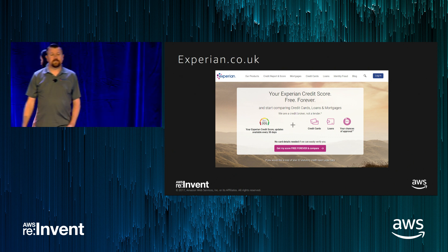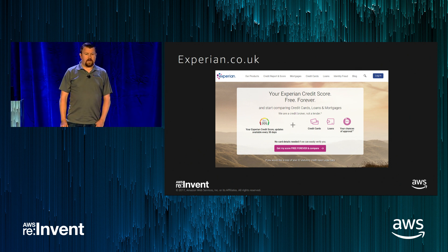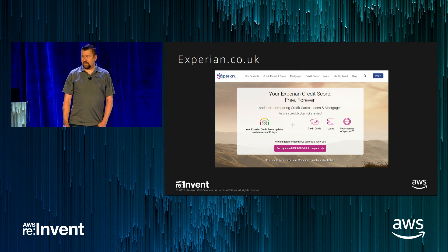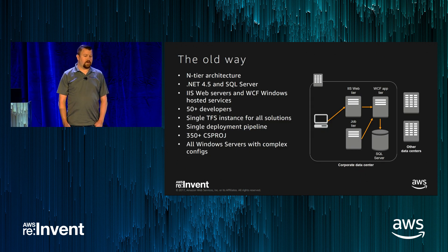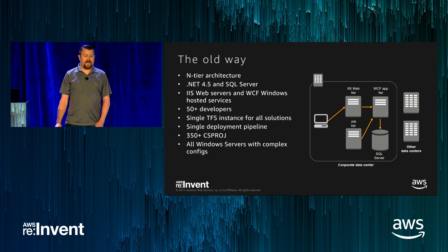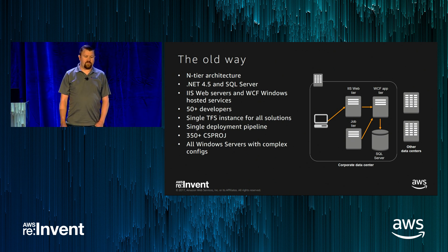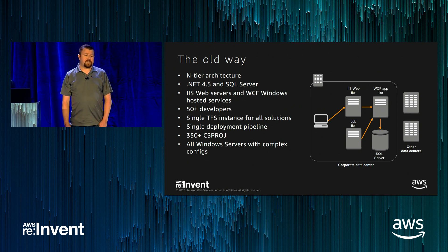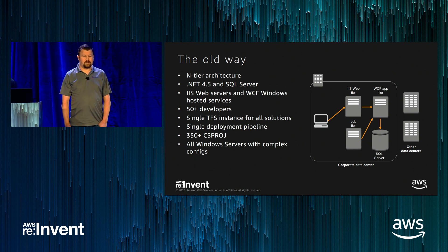Thanks, Marie. I'm Danny Prashanik. I've worked for Experian for 11 years doing .NET programming and architecture, and been doing AWS for about two years. I support Experian.co.uk — this architecture runs our Credit Expert and Credit Matcher websites in the UK. Before I get into the AWS stuff, I want to talk about where we used to be. We had an on-premises architecture running .NET 4.5, SQL Server, IIS web servers, WCF-hosted web application servers. With about 100-plus developers across three different offices, we had a single TFS instance for all our code, which was very hard to deploy from.